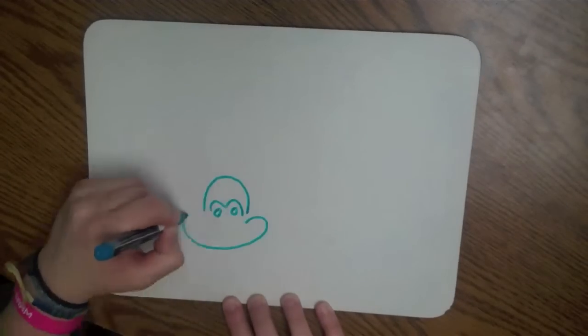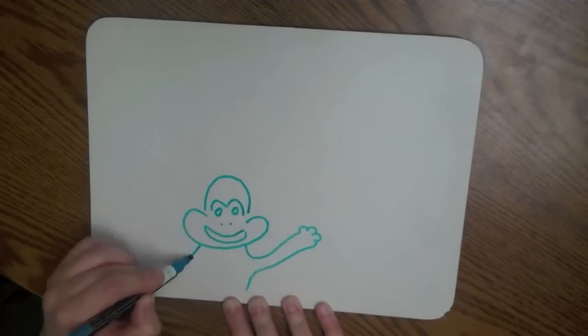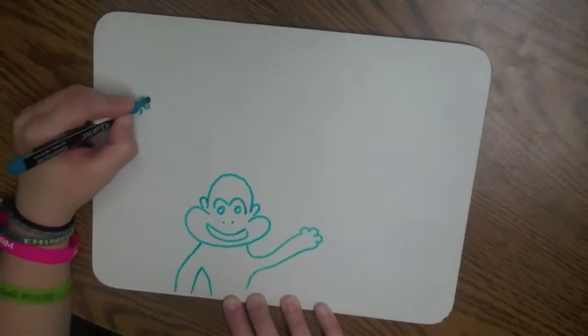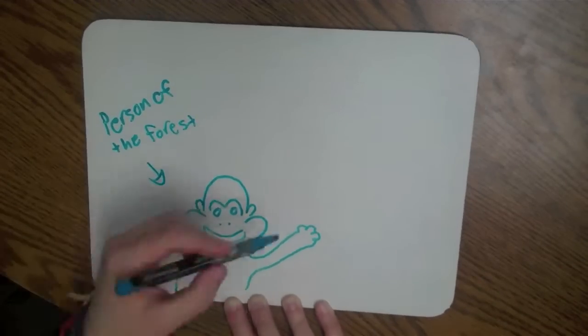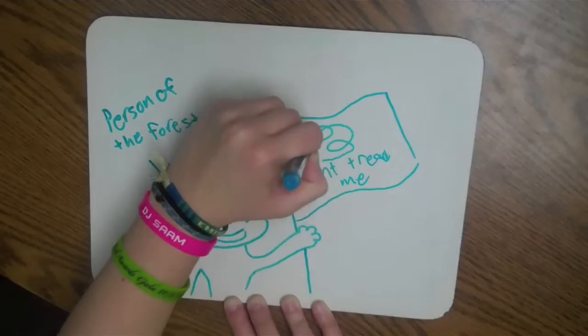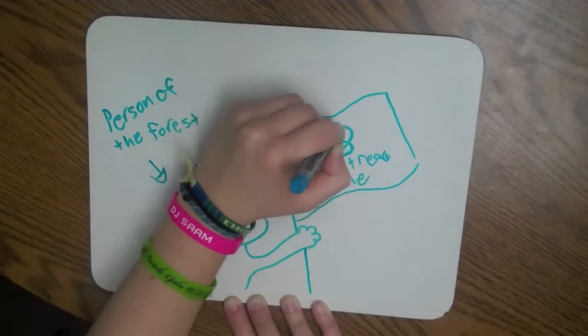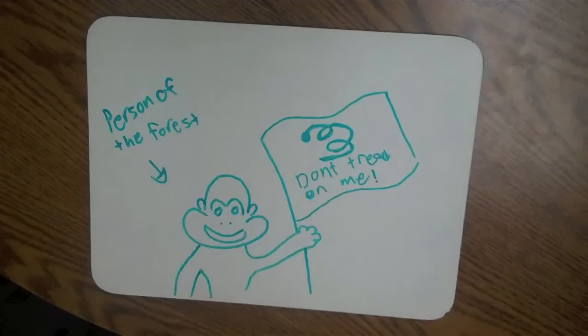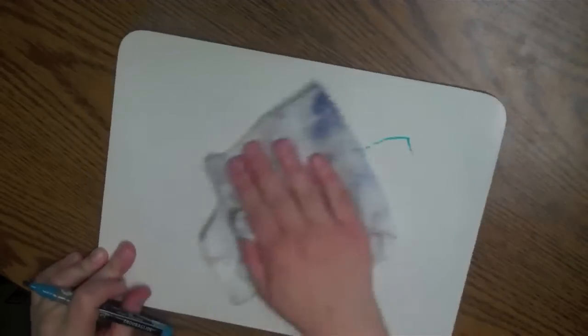Orangutans closely resemble humans. Orangutan means person of the forest in an indigenous Indonesian language. These people did not hunt the orangutans because they believed that orangutans were people hiding in the trees in order to avoid working or becoming a slave.